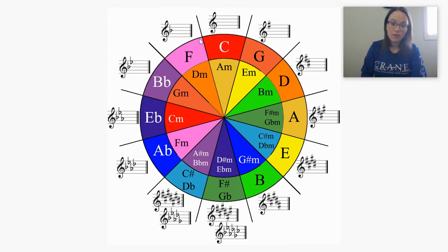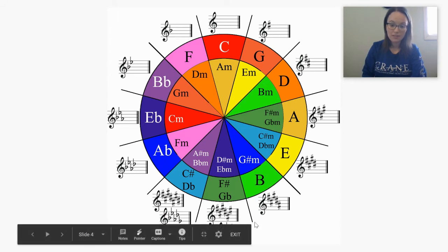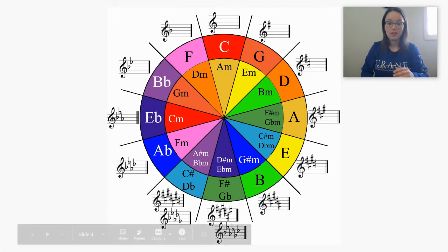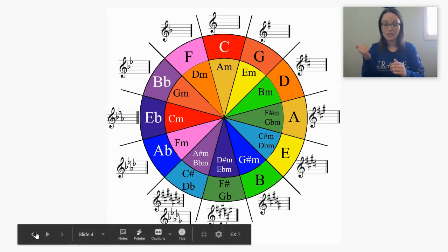If you go counterclockwise the other way, we add one flat to every key signature. So one, two, three, four, five, six, and they didn't write the seven, but normally there is one, the key of C flat. This particular circle of fifths doesn't show it, but normally it would. And so then we run out of flats. So it's a way of showing the keys that add sharps and the keys that add flats.